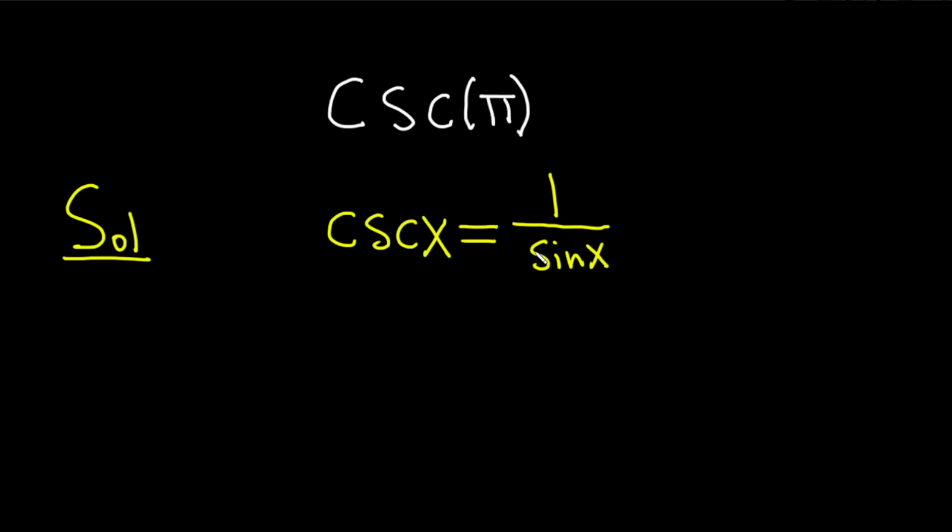So cosecant of x is 1 over sine x. So here we have cosecant of pi, and that's going to be equal to 1 over the sine of pi.